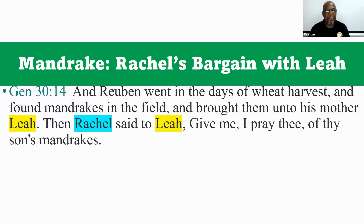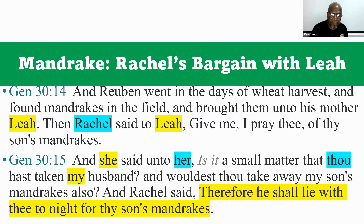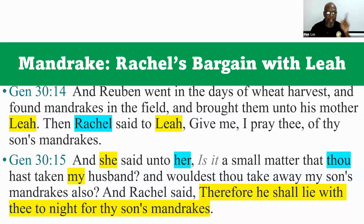Then Rachel said to Leah, 'Give me of thy son's mandrakes.' And Leah answered, 'Is it a small matter that you have taken my husband, and wouldst thou take away my son's mandrakes also?' — you remember the Esau and Jacob desperation situation? Rachel said, 'Therefore he shall lie with you tonight if you give me the mandrakes. I'll send Jacob over to you. Give me some of the mandrakes and I'll send him over tonight.' Remember the Esau and Jacob exchange.